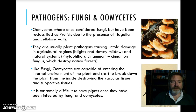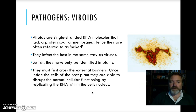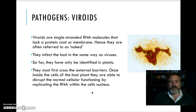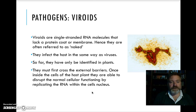Viroids are essentially a single strand of RNA with no protein coat and no membrane — described as 'naked.' These attack plants. One of the most common is the viroid that causes plant leaves to skeletonize, leaving the phloem and xylem intact but destroying the mesophyll tissue. There are no known animal viroids.